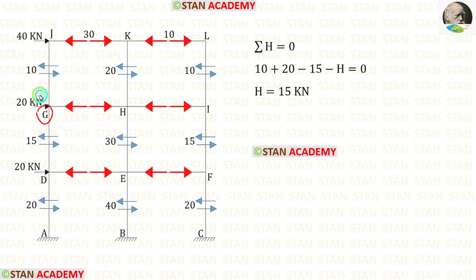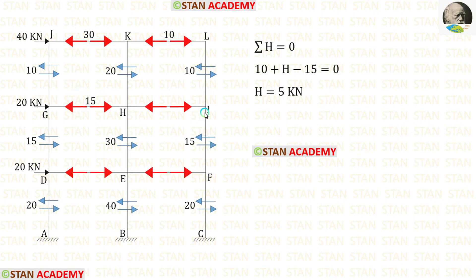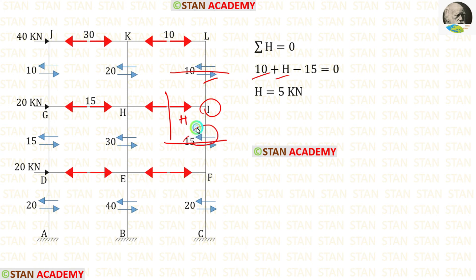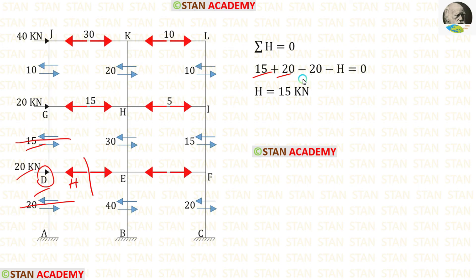Now let us take joint G. The 10 kN and 20 kN are acting towards the right side, so both are positive. The 15 kN and H are acting towards the left side, so both are negative. Finally, for H we are getting 15 kN. Let us apply that. Now let us take joint I. The 10 kN and H are acting towards the right side, so both are positive. The 15 kN is acting towards the left side, so that is negative. Then, for joints D/E/F: 15 and 20 are acting towards the right side, so positive; 20 and H are acting towards the left side, so negative. Finally, for H we are getting 15 kN. Let us apply that.